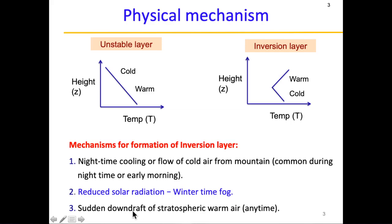The third one is a sudden downdraft of stratospheric warm air. Stratospheric air is warm, so when it dips down due to the action of waves, you have this sudden formation of an inversion layer where the warm air is on top and cold air is on the bottom. This third mechanism can happen anytime, irrespective of season.